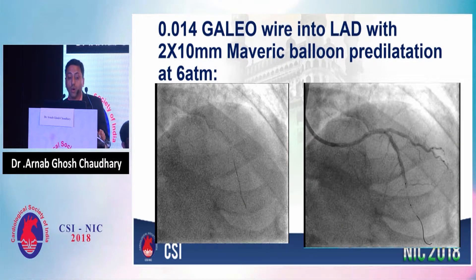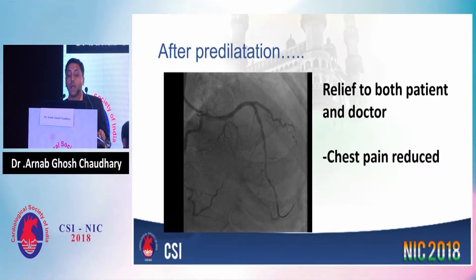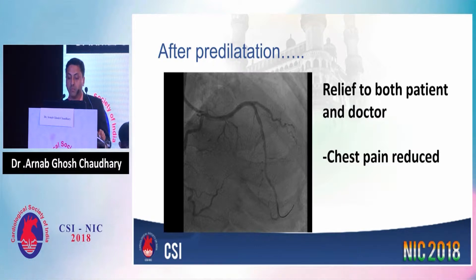In view of ongoing chest pain and persistent ECG changes, the plan was to address the lesion of the long LAD — the dual LAD — that is the distal 95% stenosis. A 0.014-inch Galio wire was introduced into the long LAD and pre-dilated with a 2 × 10 mm maverick semi-compliant balloon. After pre-dilatation, flow was established in the long LAD, chest pain was reduced, patient became clinically better, and ECG changes improved.